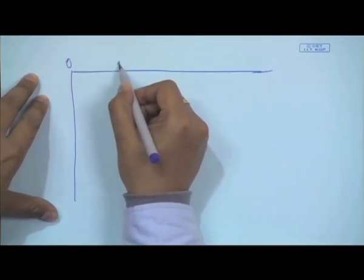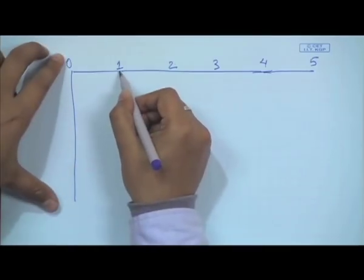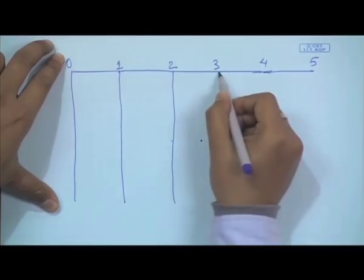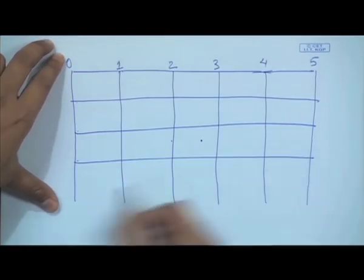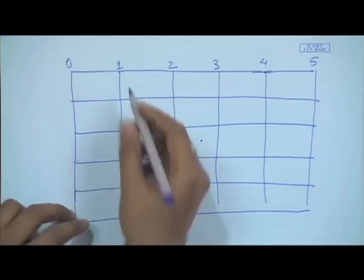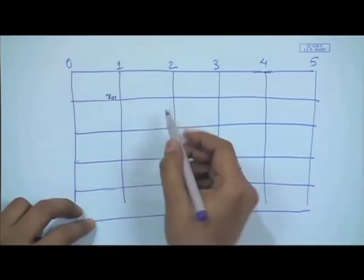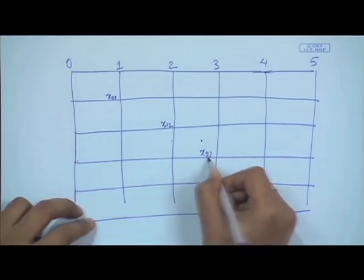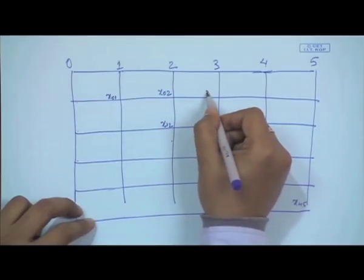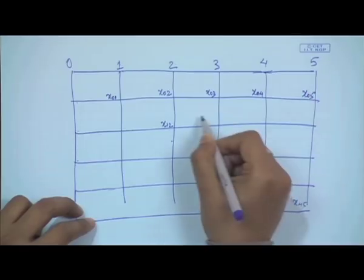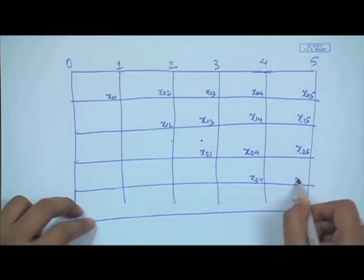Let's set up the table. There are 5 words, so we have lines 0, 1, 2, 3, 4, 5. The elements are: x_{0,1}, x_{1,2}, x_{2,3}, x_{3,4}, x_{4,5} on the first diagonal. Then x_{0,2}, x_{1,3}, x_{2,4}, x_{3,5} on the next, followed by x_{0,3}, x_{1,4}, x_{2,5}, then x_{0,4}, x_{1,5}, and finally x_{0,5}.